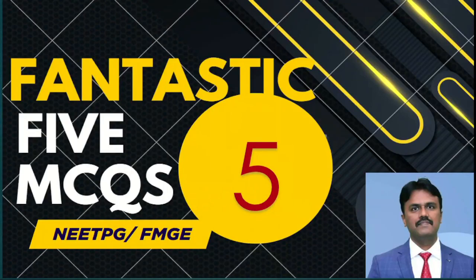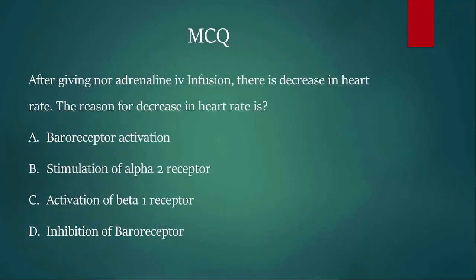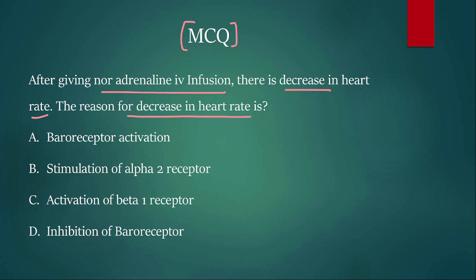Welcome to one more fantastic five MCQ session for NEET PG and FMG. The first MCQ: after giving noradrenaline IV infusion there is decrease in heart rate. The reason for decrease in heart rate is — option A: baroreceptor activation; option B: stimulation of alpha-2; option C: activation of beta-1; option D: inhibition of baroreceptor. Take your time and try to answer.